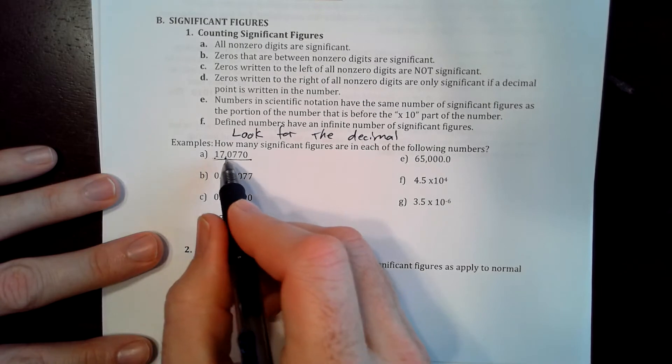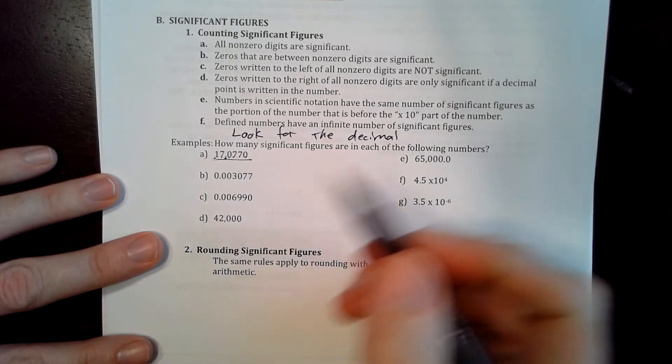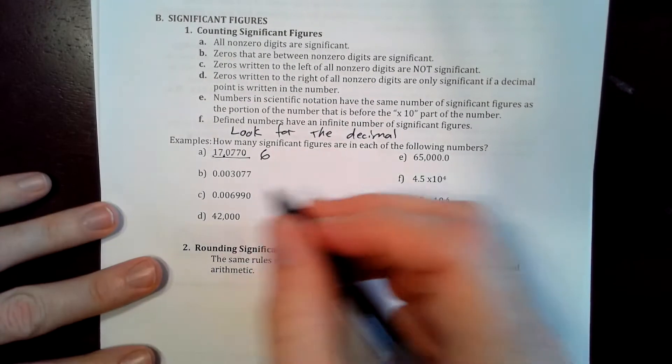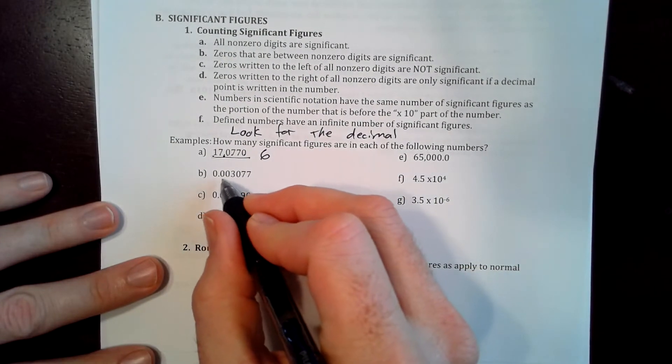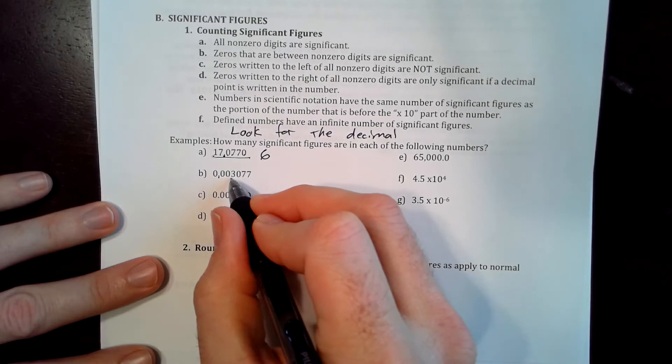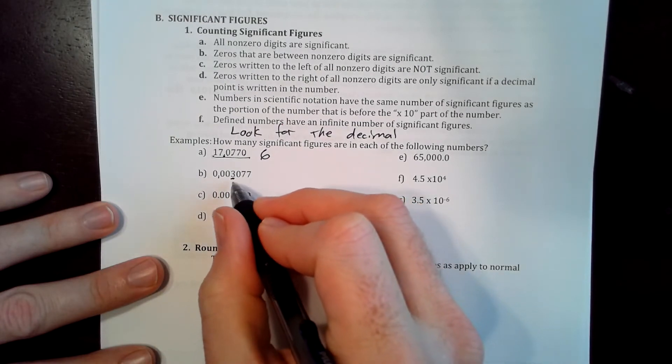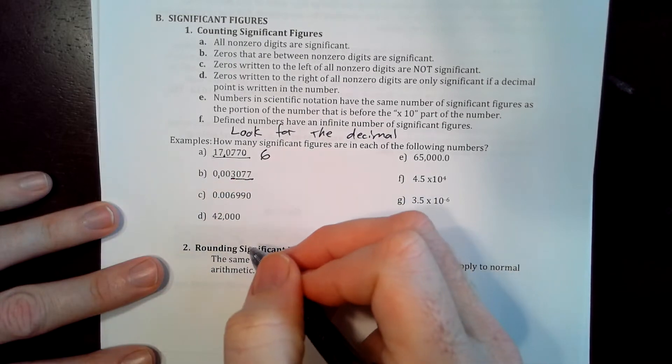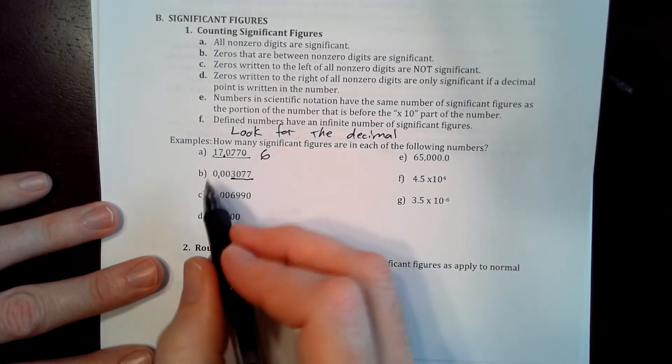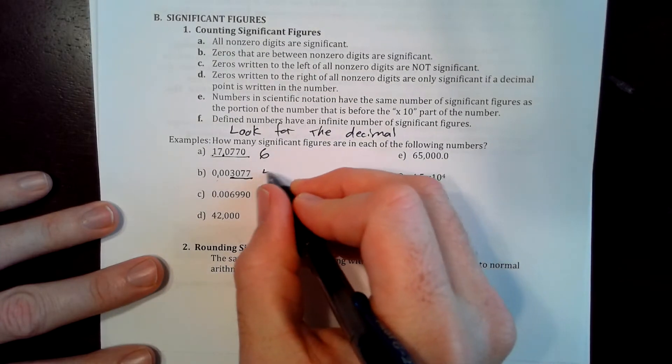So this has 1, 2, 3, 4, 5, 6, six significant digits, or sig figs, or sigdigs. Now a decimal is present, so the first significant figure after everything else. All these leading zeros right here are not significant. Leading zeros are never significant. So this one has four.